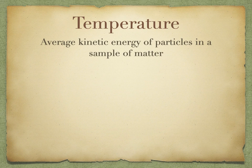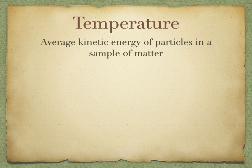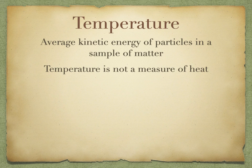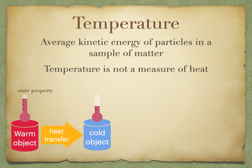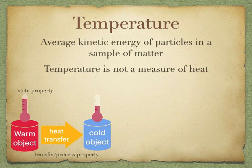Temperature is the average kinetic energy of particles in a sample of matter — and importantly, temperature is not a measure of heat. These are commonly confused. Temperature is a state property: you can measure it at a given moment in time, like a freeze frame of an object's particle kinetic energy. Heat, on the other hand, is a transfer process — you can only measure heat as it moves from a warm object to a cooler one. Heat always moves down a temperature gradient.